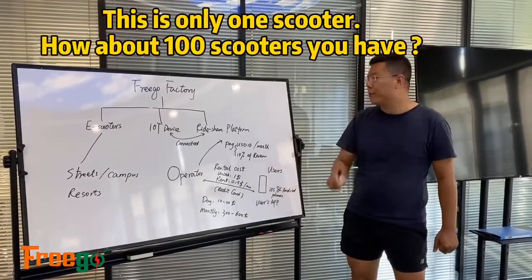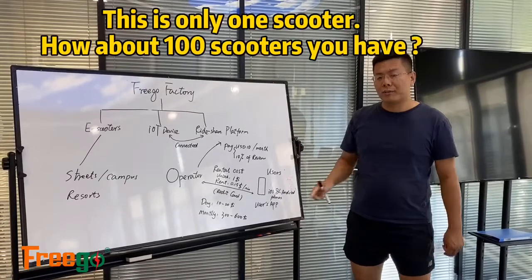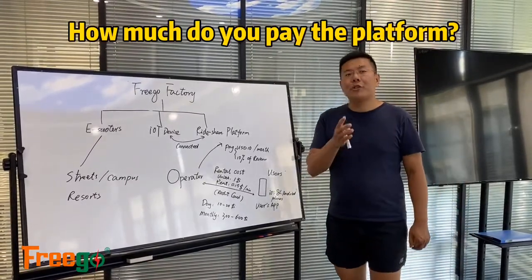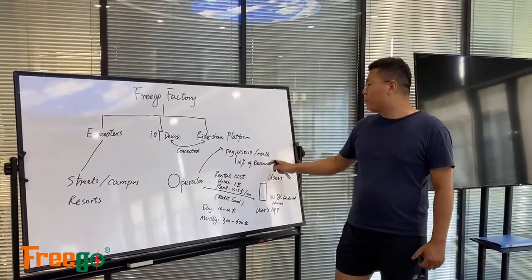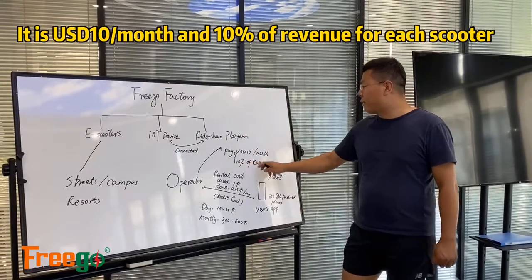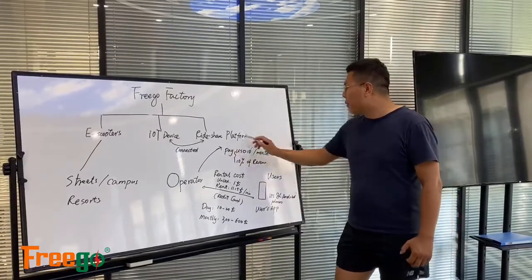This is only for one scooter. If you have 100 scooters, you can get big money. And how much you pay us? You only pay $10 per month to our platform and 10% of revenue. This is the only money you pay us.